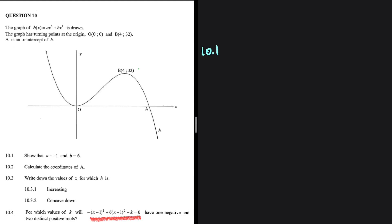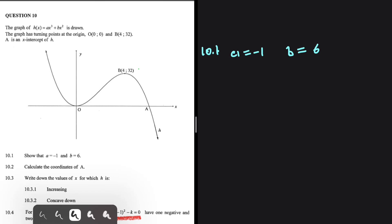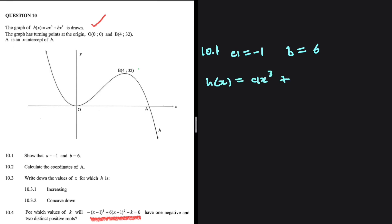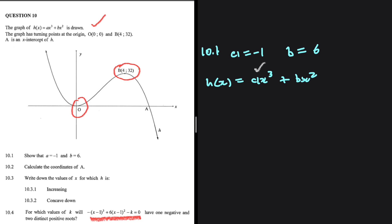Let's look at 10.1: show that a is equal to minus 1 and b is equal to 6. We're given the equation for the graph h of x, where h of x equals ax³ plus bx². We have two points — one at the origin — and a second turning point at x equals 4. We have two variables, a and b, so we need two equations.